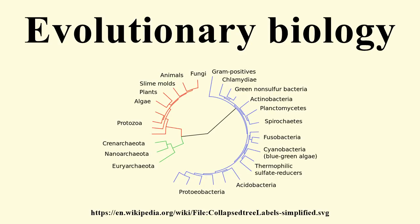Evolutionary biology, as an academic discipline in its own right, emerged during the period of the modern evolutionary synthesis in the 1930s and 1940s. It was not until the 1970s and 1980s, however, that a significant number of universities had departments that specifically included the term evolutionary biology in their titles, often in conjunction with ecology and behavior.